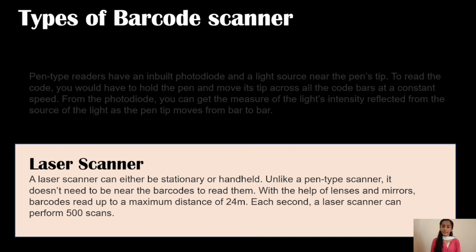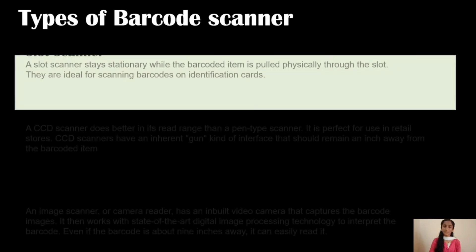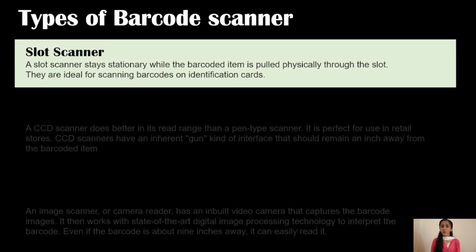The second type is the laser scanner. A laser scanner can either be stationary or handheld. Unlike the pen type scanner, it doesn't need to be near the barcodes to read them. With the help of lenses and mirrors, barcodes can be read up to a maximum distance of 24 meters. Each second a laser scanner can perform 500 scans. Another type is the slot scanner. A slot scanner stays stationary while the barcoded item is pulled physically through the slot. They are ideal for scanning barcodes on identification cards.